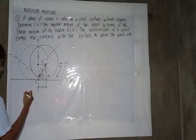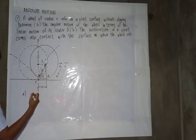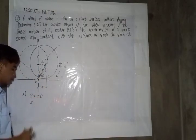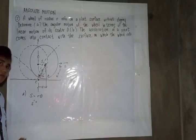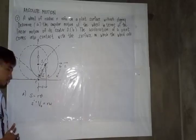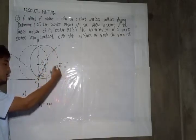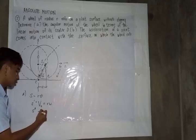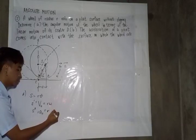So for letter A, the angular motion of the wheel in terms of linear motion of its center O — we have to find the angular motion represented by S equals the radius multiplied by theta. The second relation is represented by S prime, which equals V₀, or initial velocity, equals R times W. And the third relation, S double prime, represents the initial acceleration which equals the radius multiplied by angular acceleration.